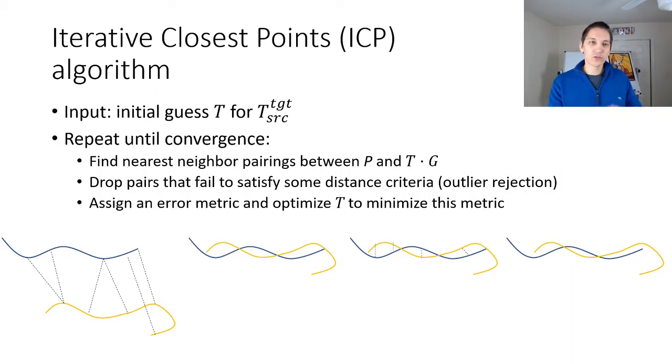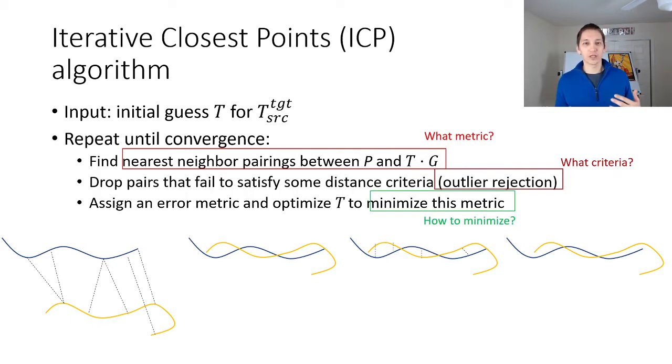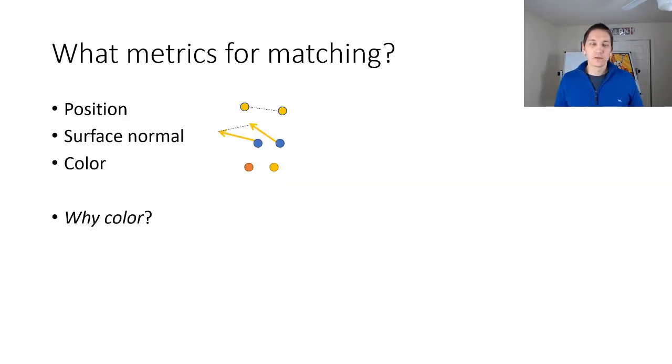There's a lot of nuances in iterative closest points algorithms and there's actually dozens or hundreds of variants of iterative closest points algorithms out there. They differ in terms of which metric we use to find nearest neighbor pairings. They also use various types of criteria to reject outliers and they also vary in terms of the method in which the metric is actually used and which metric is used and how it's minimized. One first variation is to think about what kind of metrics we'll use to decide on which points match between the source and the target geometries.